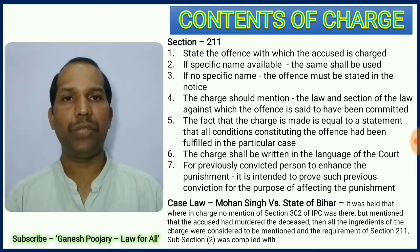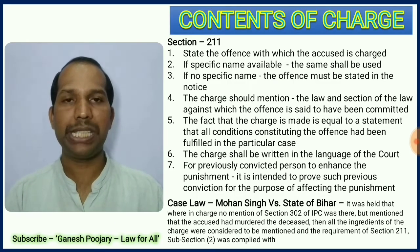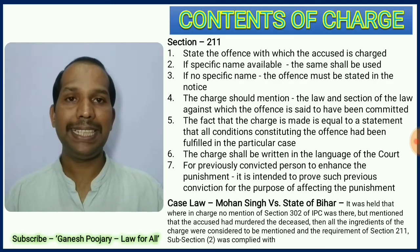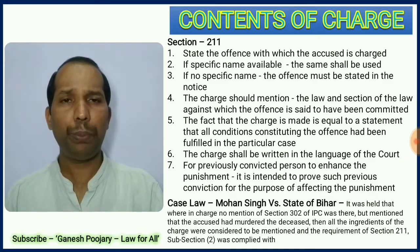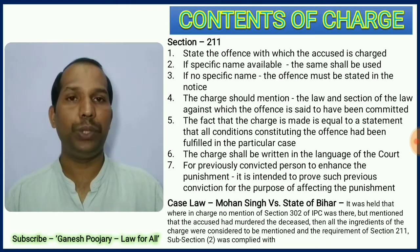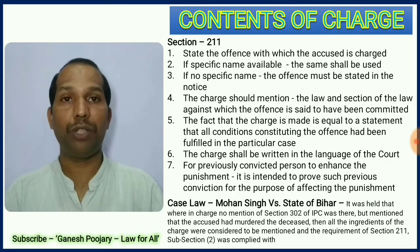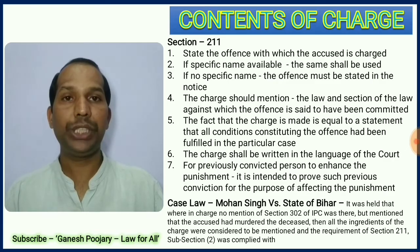Section 211 is one of the very important sections when it comes to charge because it explains the contents of charge. Section 211 has seven subclauses. Number one says it should state the offenses. Number two says if a specific name is available under any law — IPC or any other law — the name of the offense should be mentioned. Three says if such name is not available under any law, the offense should be very clearly mentioned in the notice given to the accused. Number four says the law and section should be very clearly mentioned when preparing a charge. Number five says the fact that the charge is made is equal to a statement that all conditions constituting the offense had been fulfilled in that particular case. Number six says it should be in the language of the court. Seventh, if there was a previously convicted offense by a person, such conviction should be mentioned because that will help the court to decide the increase of punishment accordingly.